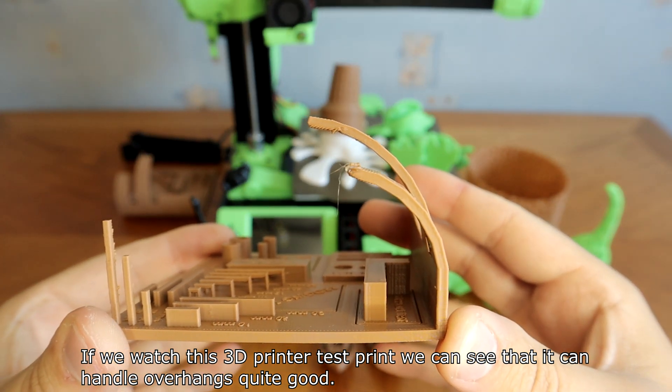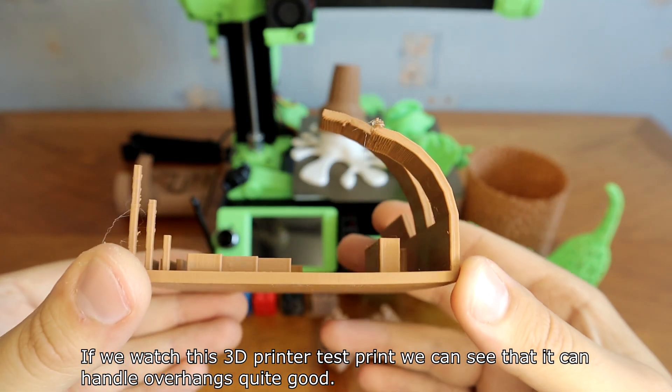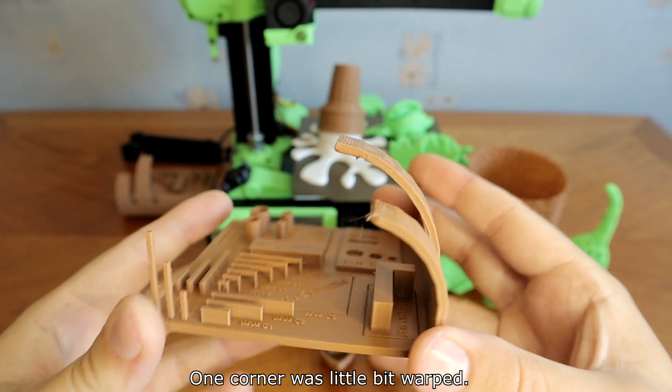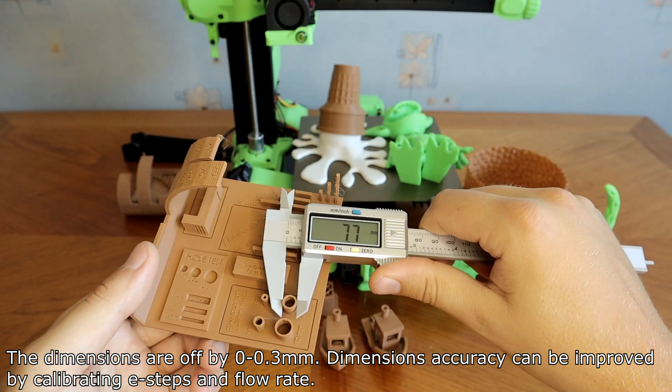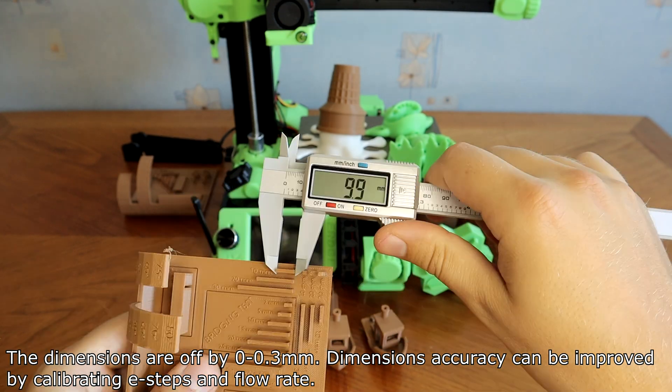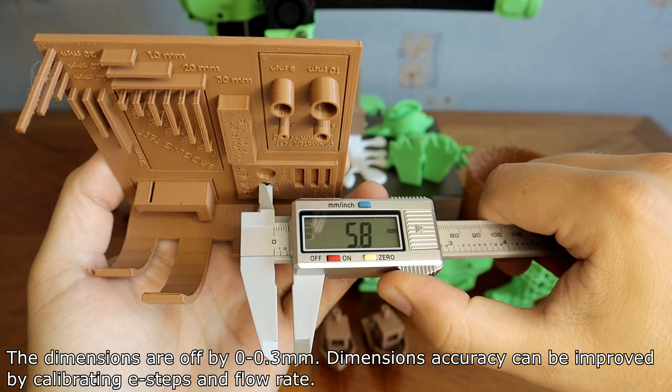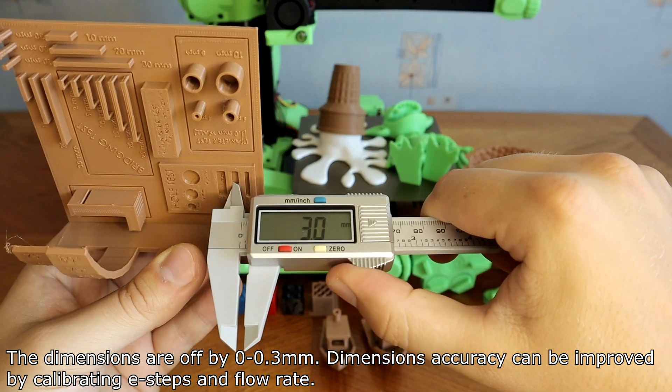If we watch this 3D printer test print, we can see that it can handle overhangs quite good. One corner was a little bit warped. Bridging test is okay. Smaller text could be better. The dimensions are off by 0 to 0.3mm. Dimensions accuracy can be improved by calibrating E-steps and flow rate.